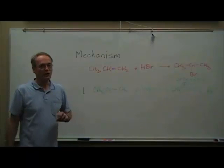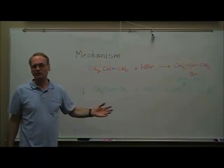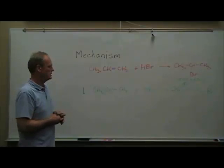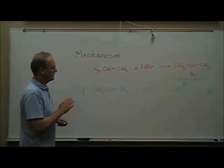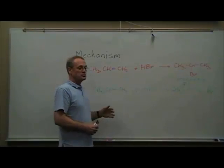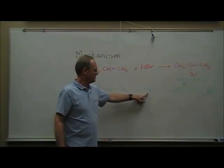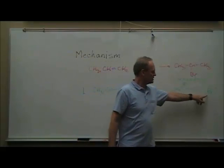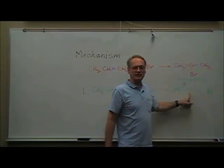Markovnikov didn't know any of that. He didn't know anything about the mechanism — he just did a bunch of reactions and tried to figure out the pattern from looking at what actually formed. Anyway, that's the first step in the mechanism — very simple. It's really just an acid-base reaction in which the HBr is the acid, the alkene is the base, the carbocation is the conjugate acid, and Br⁻ is the conjugate base.